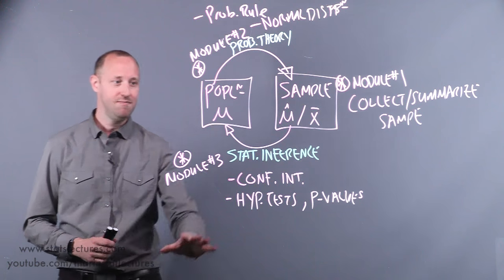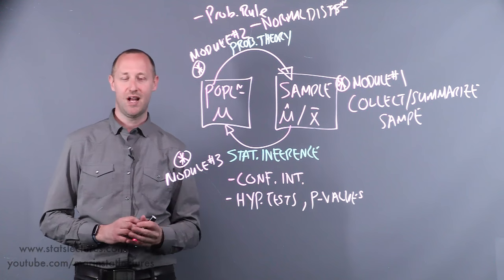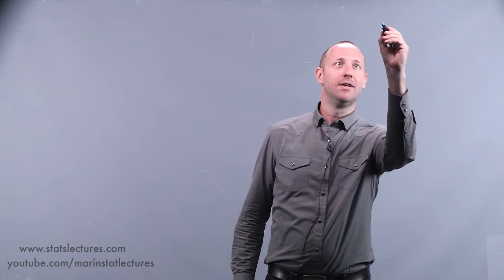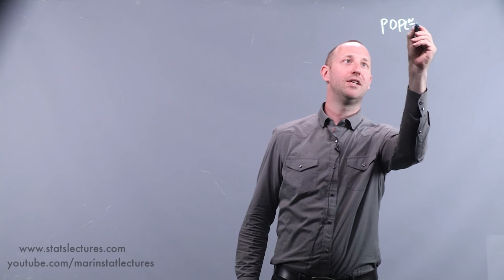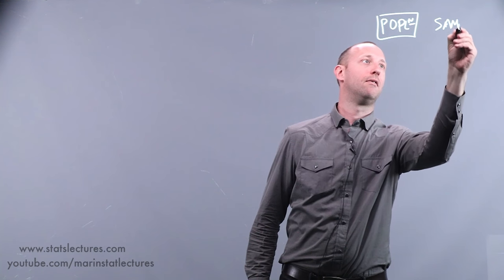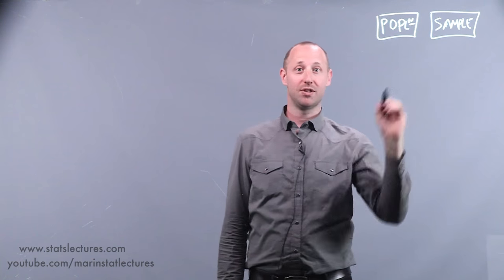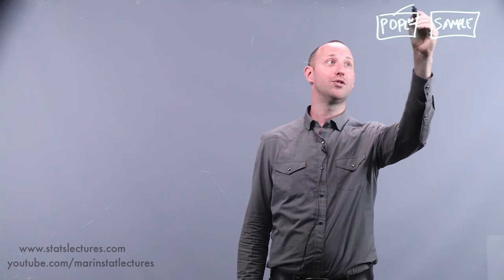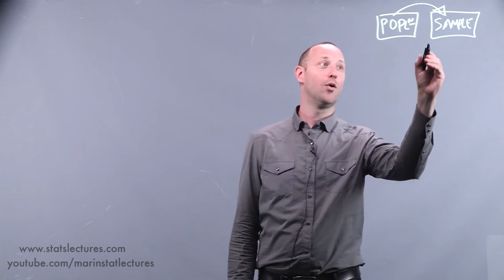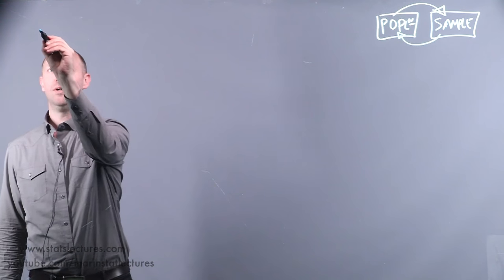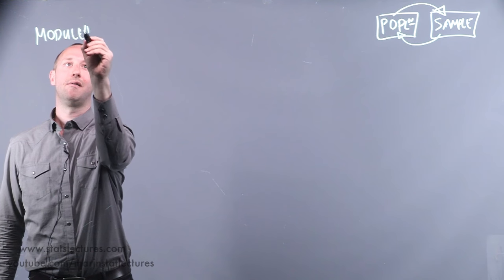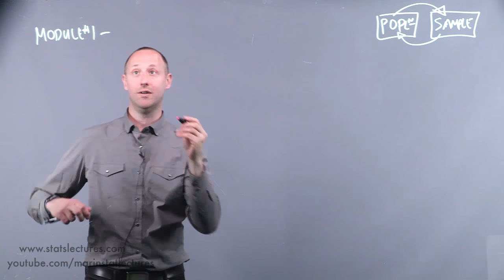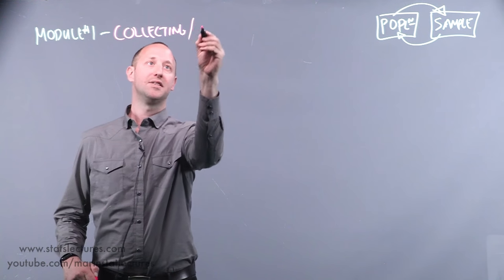The rest of an intro stats course involves filling out all the details — all the different methods of analysis depending on whether we're analyzing numeric or categorical variables. Let's spend a little time going over exactly what's covered in the eight modules of our course. In an intro stats course, we're generally moving back and forth between populations and samples. In module one, this is where we cover collecting and summarizing a sample.